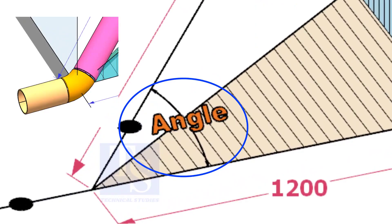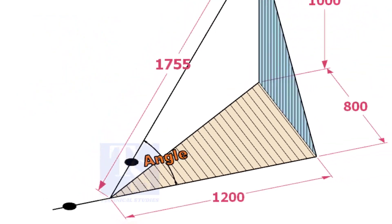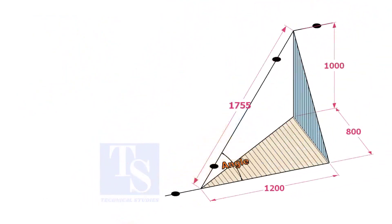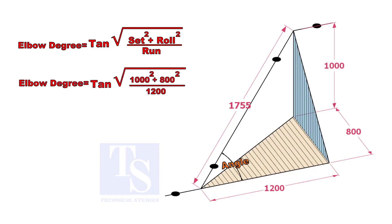Let us calculate the degree of the elbow or the including angle. The formula is the root of the set and the roll divided by run into tan.